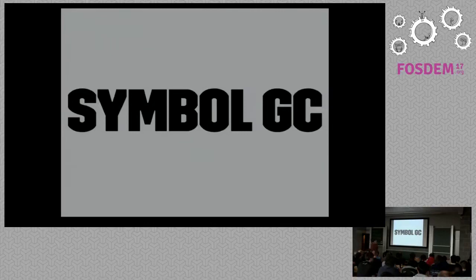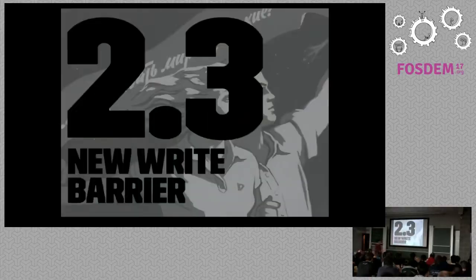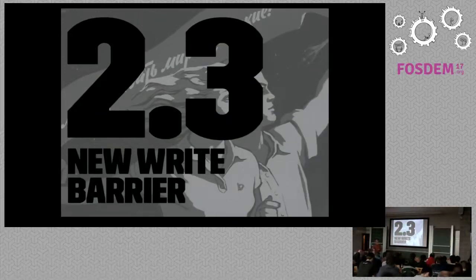Symbol GC — we also got that in 2.2. It's not really that complicated: now symbols are garbage collected too. In 2.3, not much changed. Ruby 2.2 was kind of the last major change to the garbage collector.